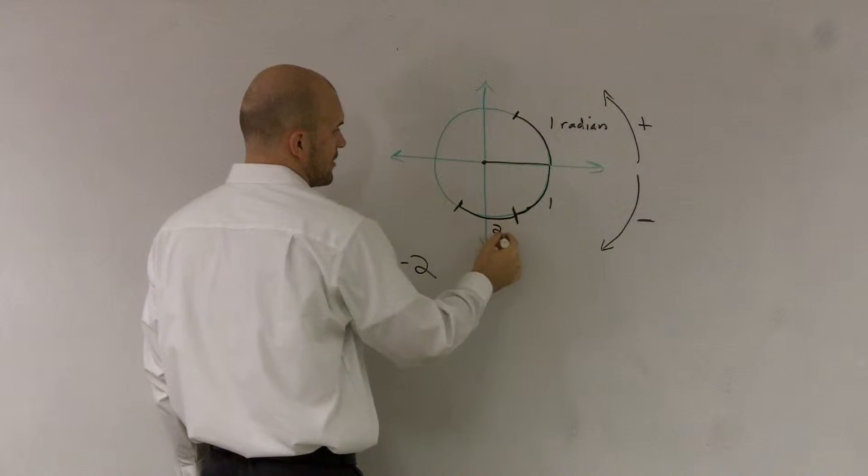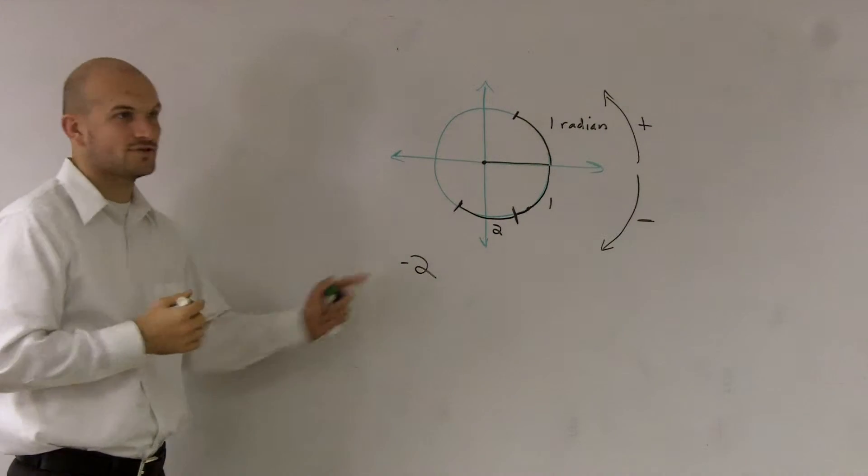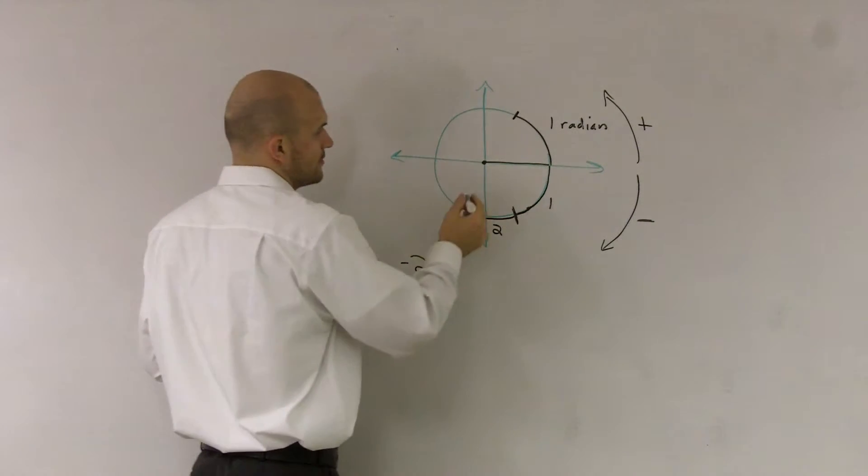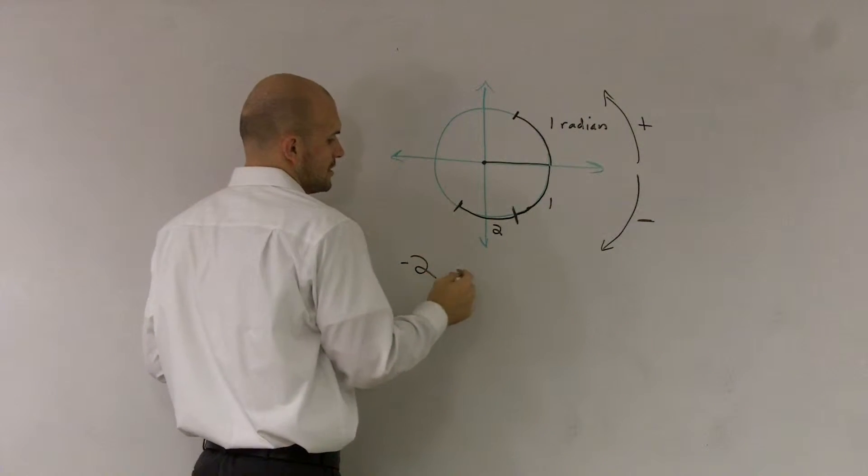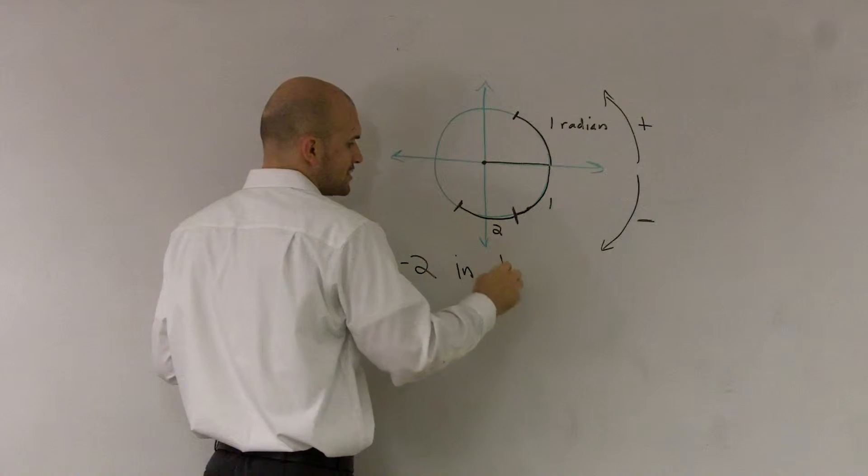So this would be one radian, and that would be two radians. Do you kind of see that? So then what quadrant is negative two radians? So it is in quadrant three.